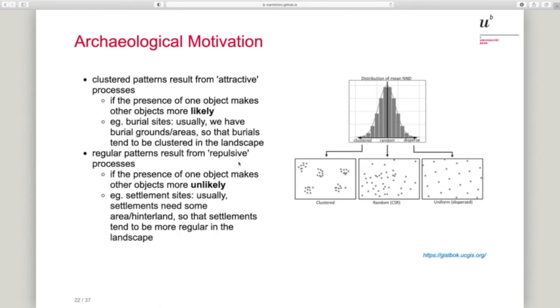On the other hand, regular patterns result from repulsive processes. For example, settlements. If we have a settlement, usually there comes some territory with the settlement. So not in the absolute vicinity of one settlement will be another settlement. They are repulsing each other in a way. That's why settlements tend to be more regularly spaced in the landscape. That's just very rough, crude generalizations that of course do not affect or are not real for every individual case.